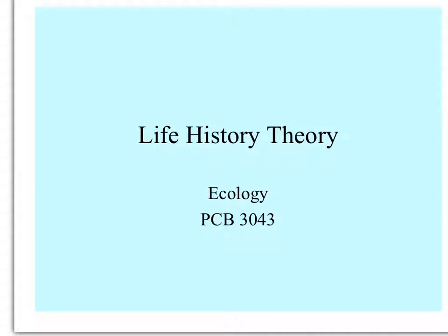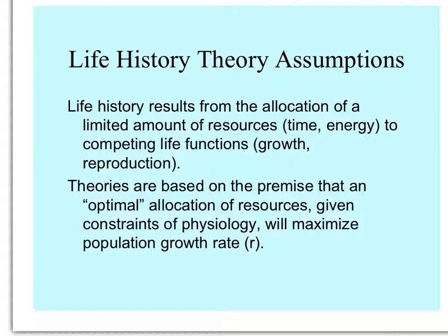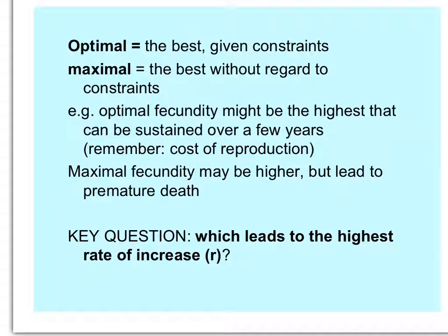Life history theory deals with the fact that organisms have a limited amount of resources, and resources allocated to one function can't be allocated to another. There is a premise that there's an optimal allocation, given the limitations of whatever organism you're concerned with, that will maximize the population growth rate. Optimal is the best within reason — it's different from maximum or maximal allocation, which is the absolute best without regard to constraints.